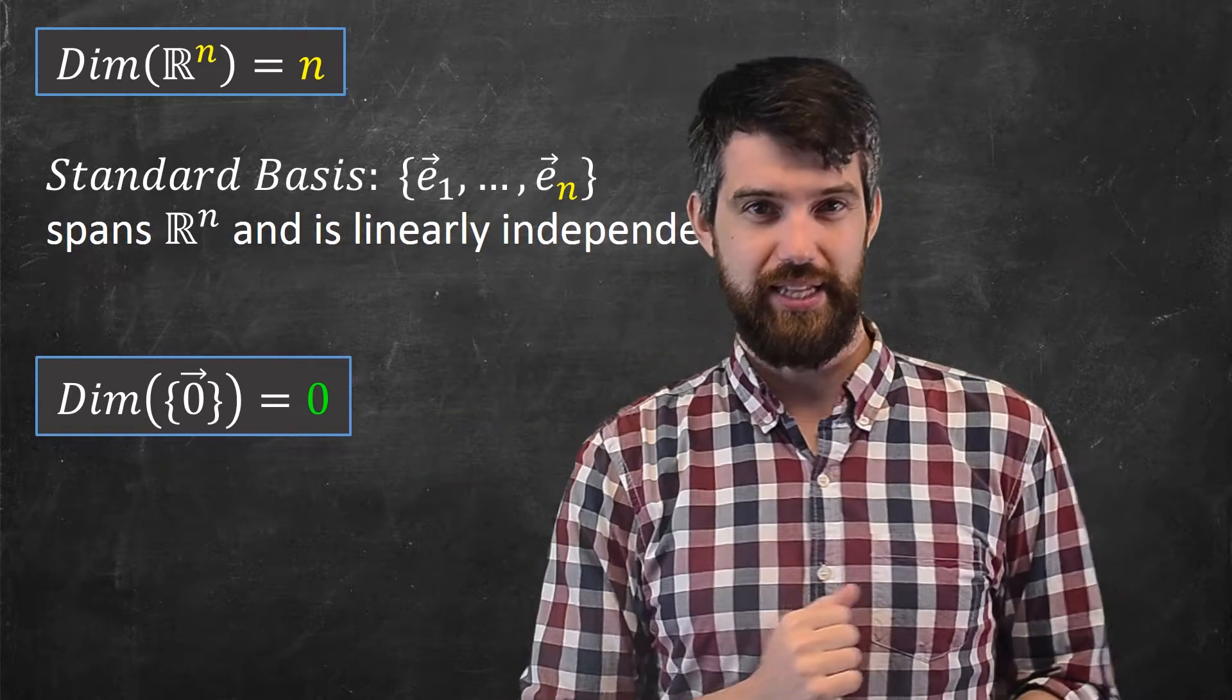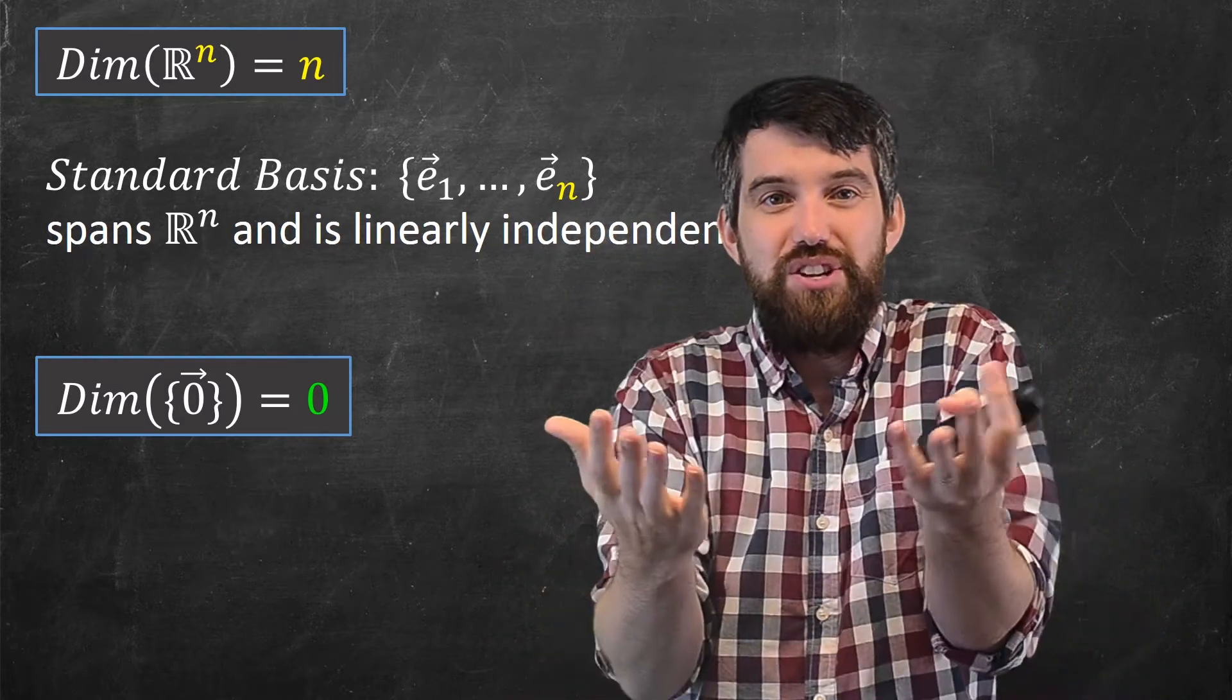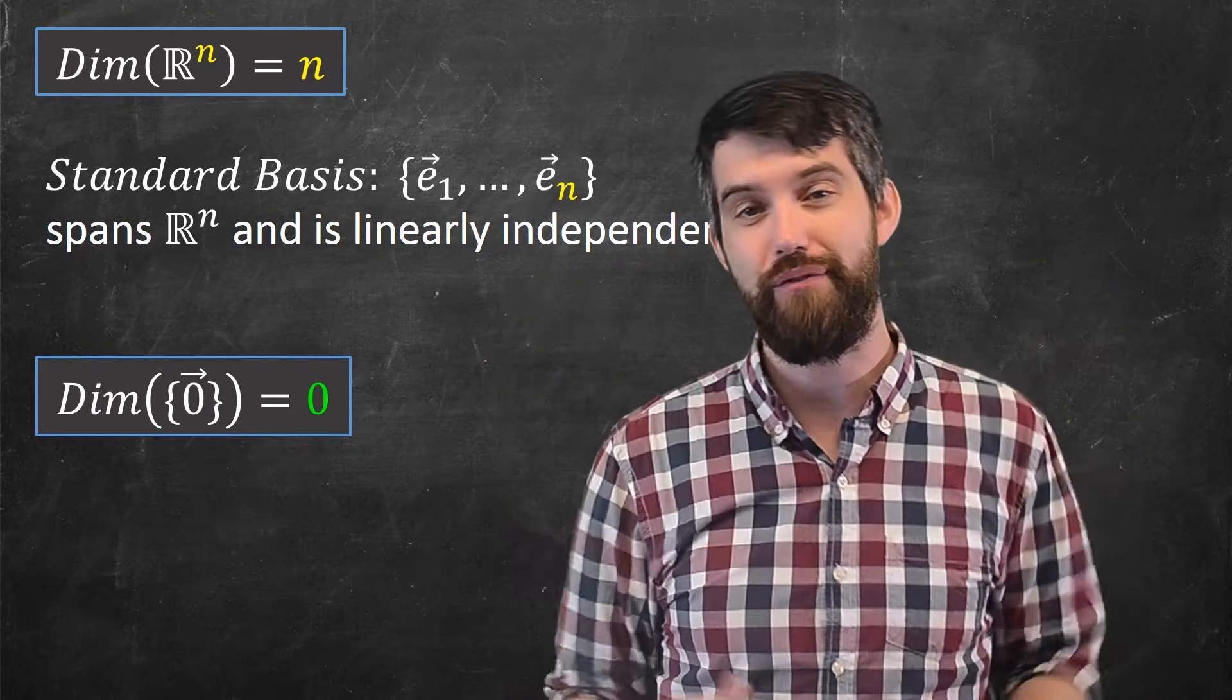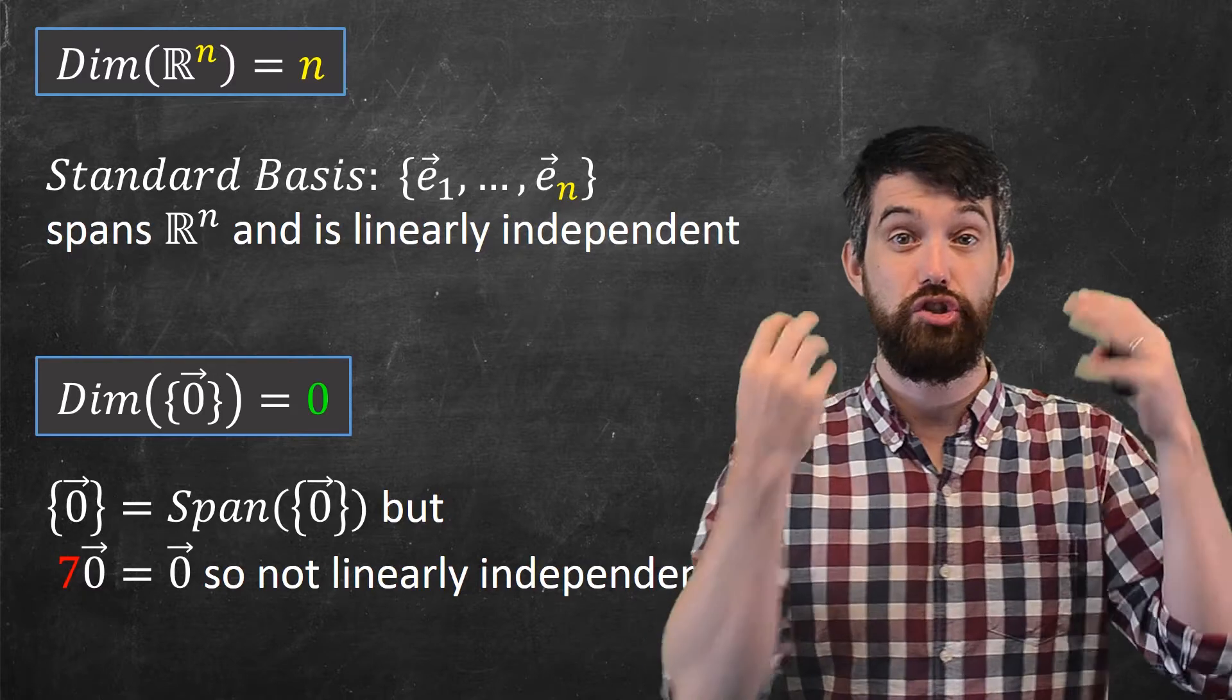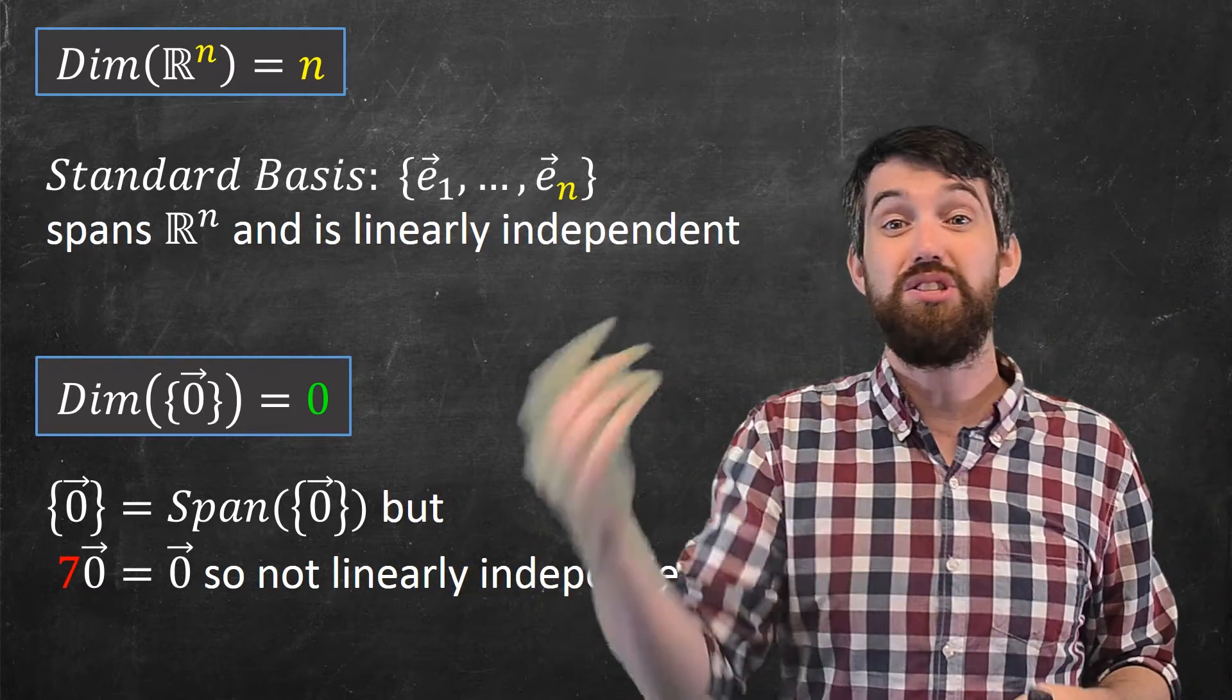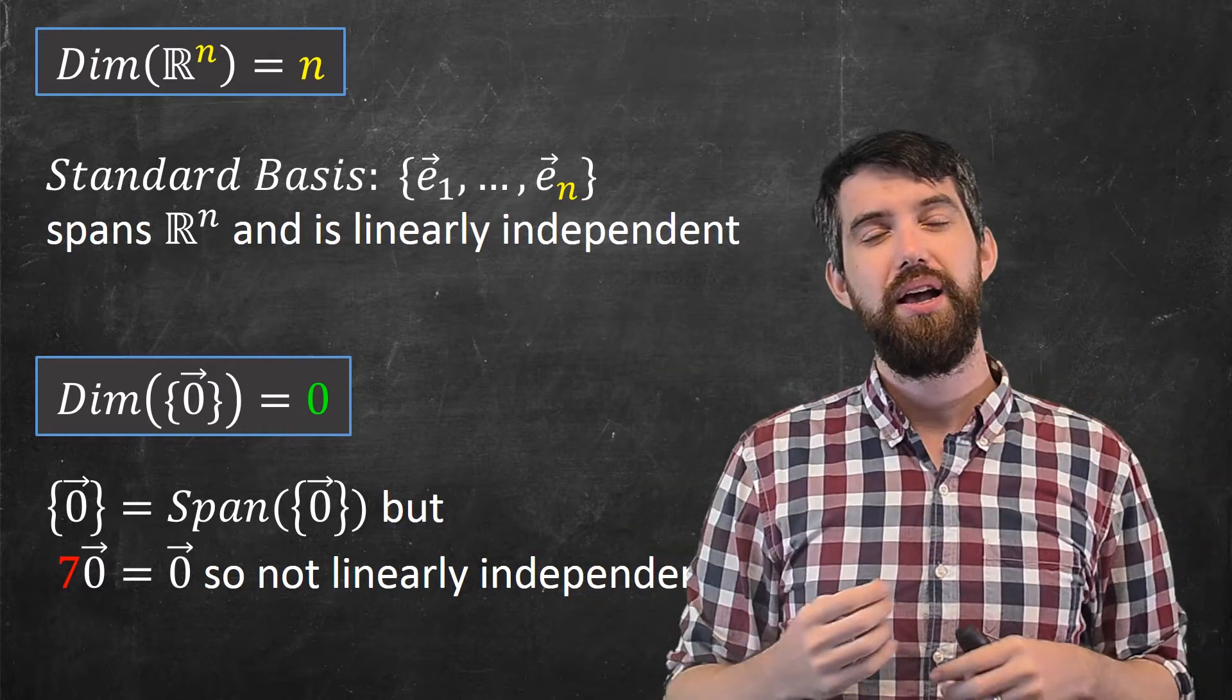Now, what about a basis for this? Can I come up with a basis vector for it? Well, the only vector that's even in it is the zero vector. So the only candidate to be a basis vector is the zero vector. Now, the set of vectors, which is just a zero vector, is a span for the subspace, because the zero vector could always be written as a linear combination of the zero vector. Pretty easy.